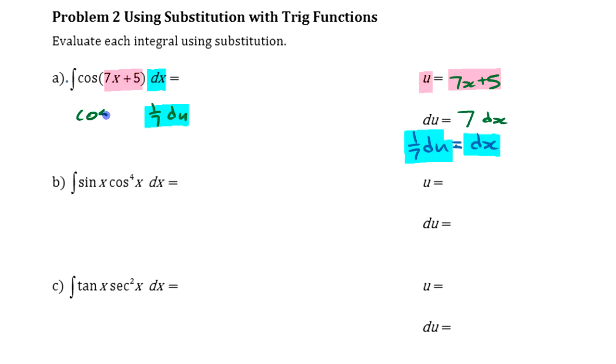Because then I can replace dx with what we know it's equal to here, 1/7 DU. And then we've got cosine of U, because that's what we replaced it with there. Color-coded here that, and then we've got our integral. If we're going to work out that integral, I'm going to put the 1/7 in front.